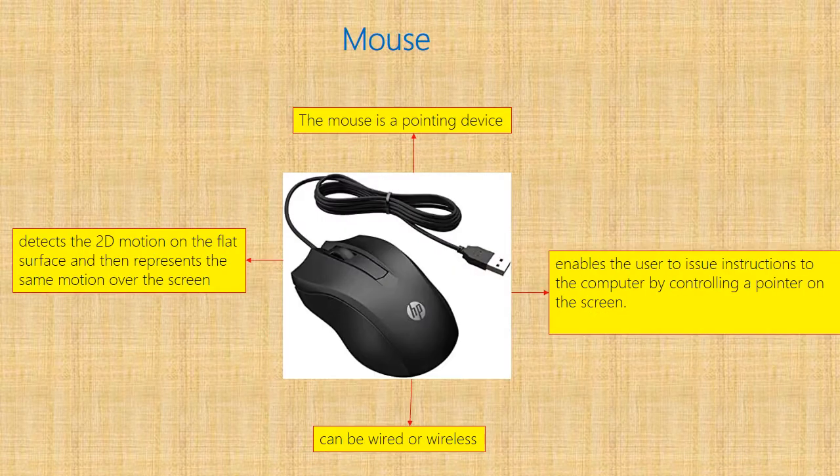The mouse is a pointing device — it can be wired or wireless. The mouse detects 2D motion on a flat surface and represents the same motion on the screen, enabling the user to issue instructions to the computer by controlling the pointer on the display screen.